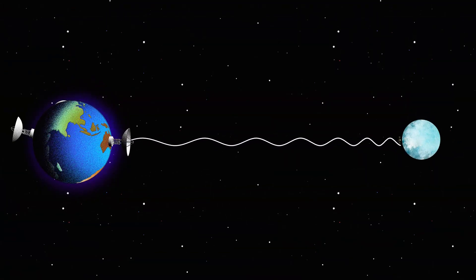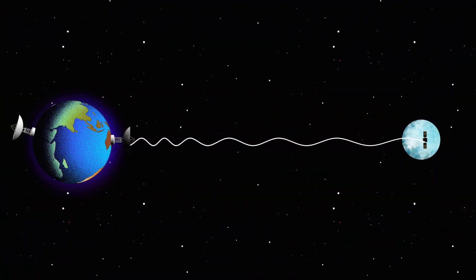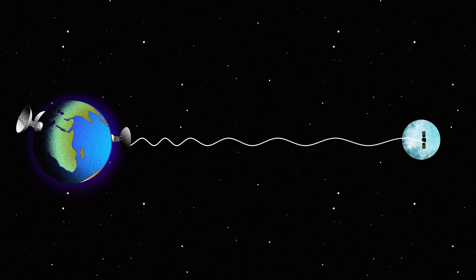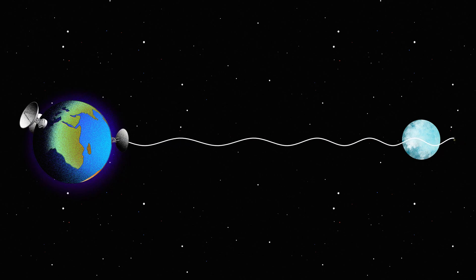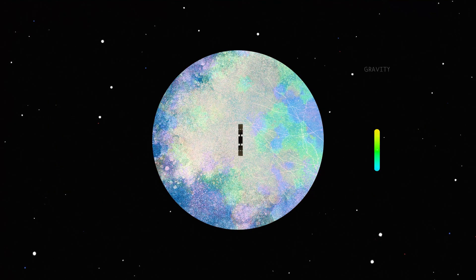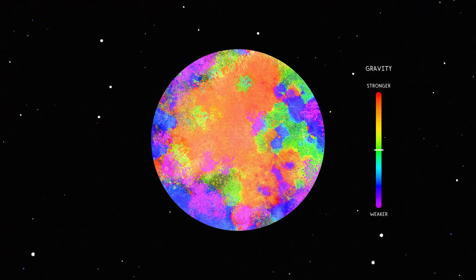The Doppler phenomenon is observed here when the spacecraft and the DSN antenna move in relation to each other. Differences between the frequency of radio signals sent by the spacecraft as it orbits and signals received on Earth give us details about the gravitational field of a planetary body.